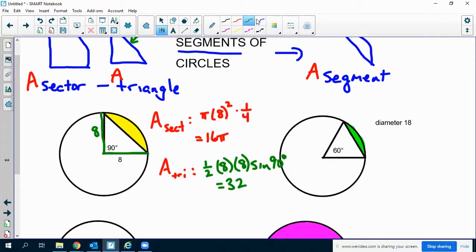So to get the area of the segment, we do 16π minus 32, and I get my final answer of 18.265 units squared. So that is the first problem.